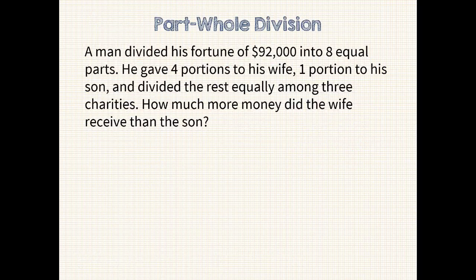Let's look at a part-whole division problem now. A man divided his fortune of $92,000 into 8 equal parts. He gave 4 portions to his wife, 1 portion to his son, and divided the rest equally among 3 charities. How much more money did the wife receive than the son? What do you think the sentence statement should be? How about the wife received blank more dollars than the son? What do you think the important information is in this problem?